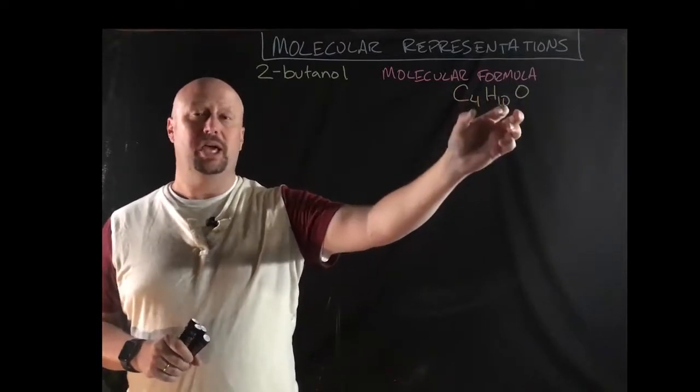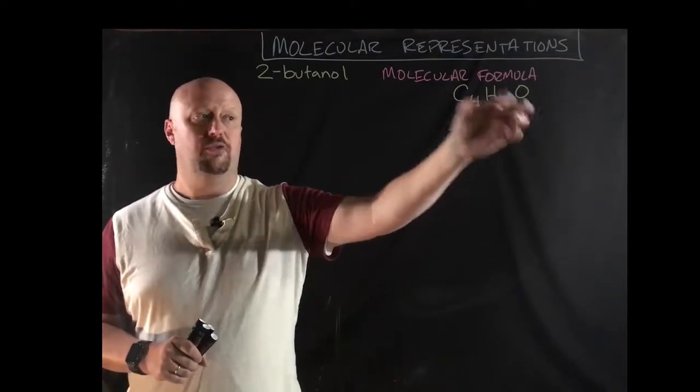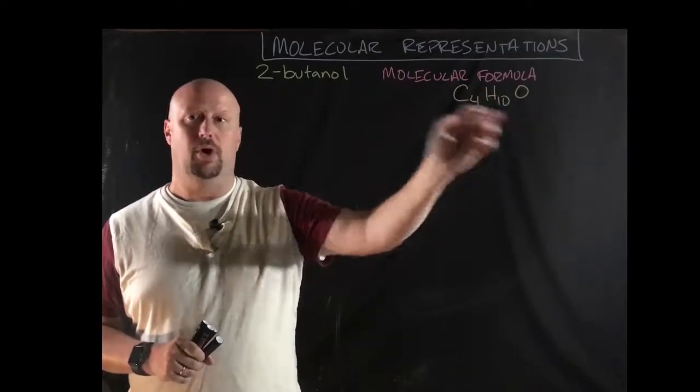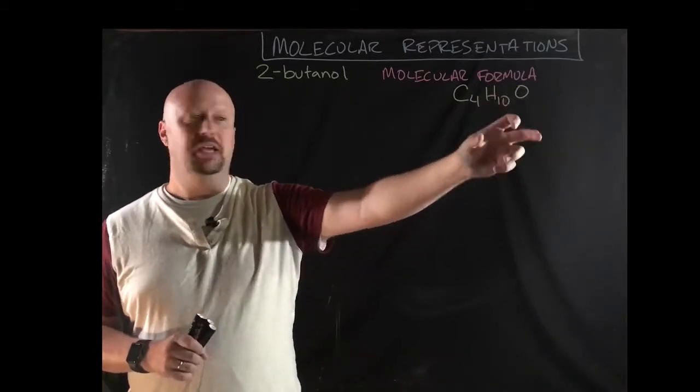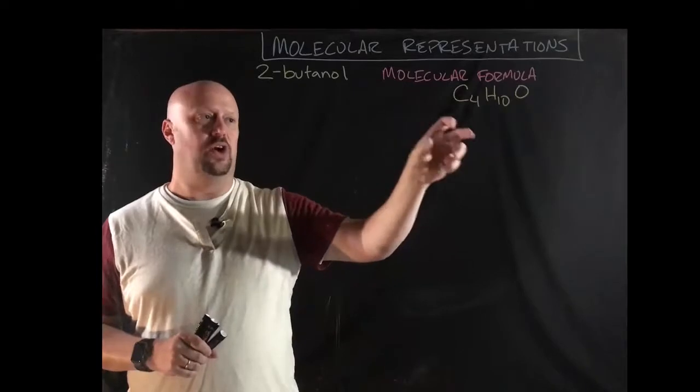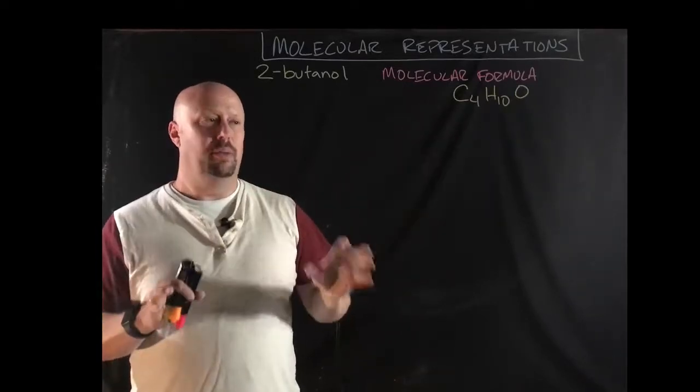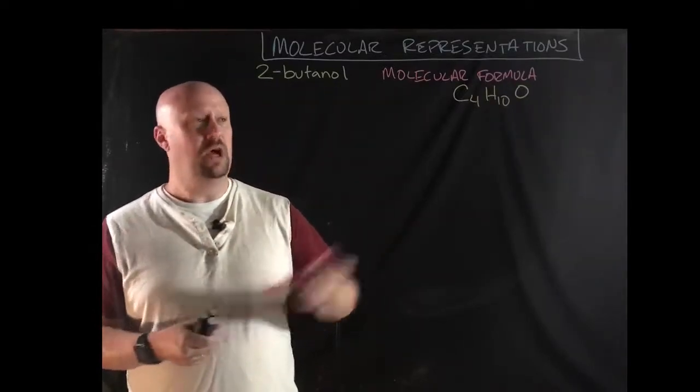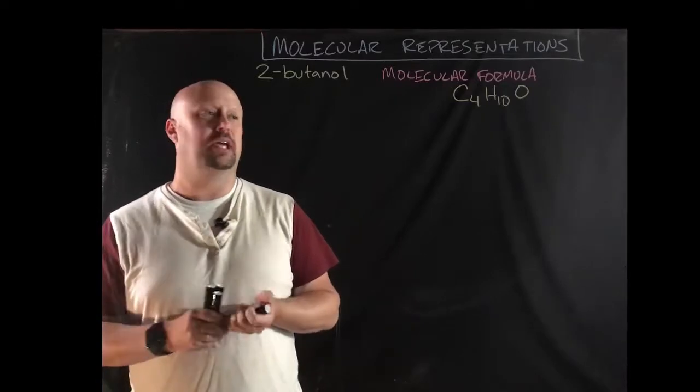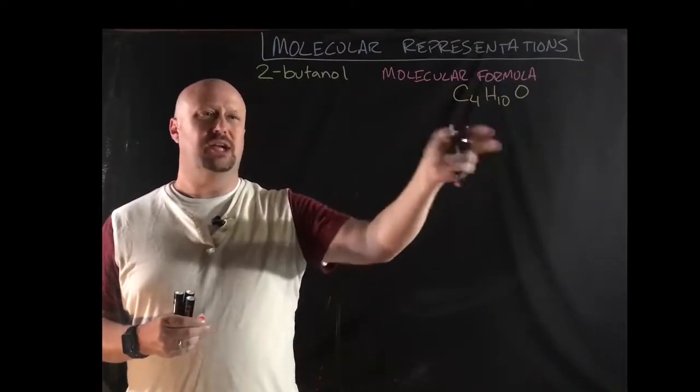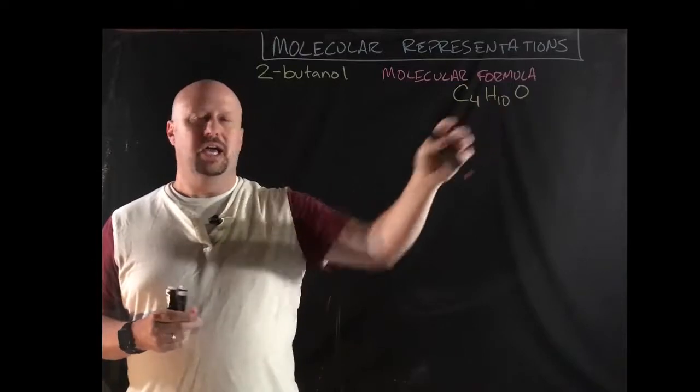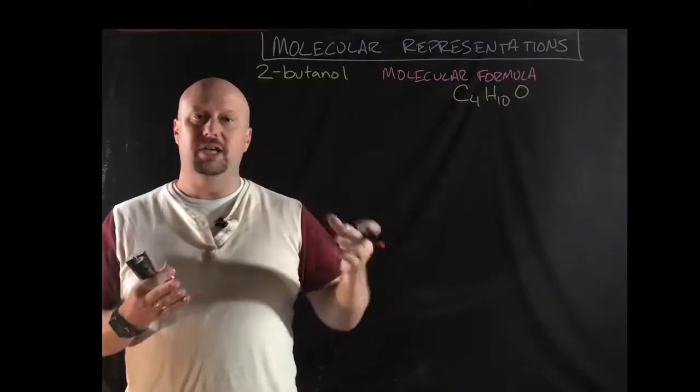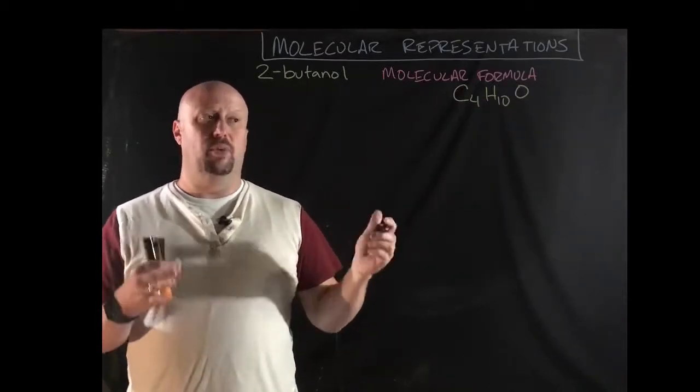The reason that I say specifically that this is 2-butanol is because we can have different constitutional isomers for this molecular formula, meaning that we could draw it as 2-butanol, or we could draw it as 1-butanol. We could draw it as an ether. There are several different ways that we could draw that particular thing. That's the molecular formula. That actually is one of the molecular representations. Now, as you can note, that one's not terribly useful because unless you're talking about really tiny molecules, they can have isomers and they can be arranged differently, and so therefore we need a little bit more.